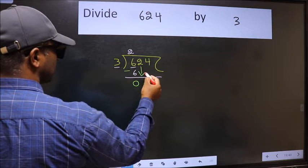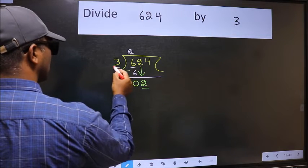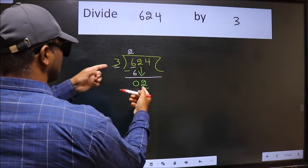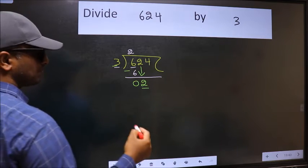After this, bring down the beside number. So 2 down. Now here we have 2 and here 3. 2 is smaller than 3. So we should bring down the second number.